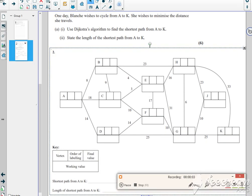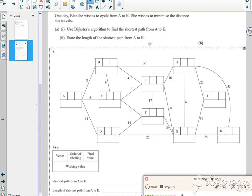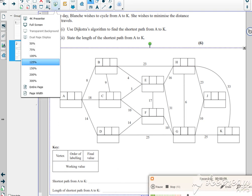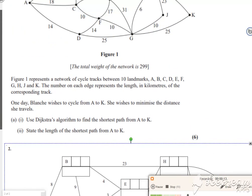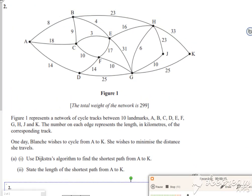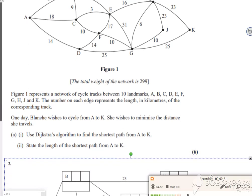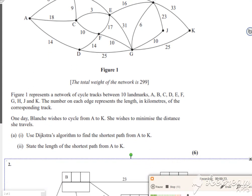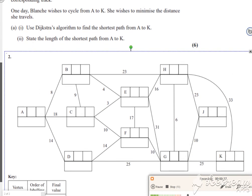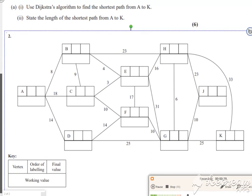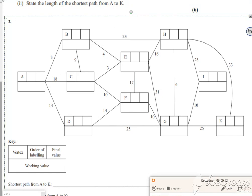Hi everyone, just thought I'd do a quick recap on Dijkstra's in case you kind of forgot it with all the work you're doing. This is from the 2022 paper and it says figure one represents a network for 10 landmarks. We're going to use Dijkstra's to find the shortest path from A to K.